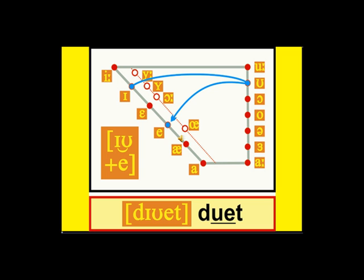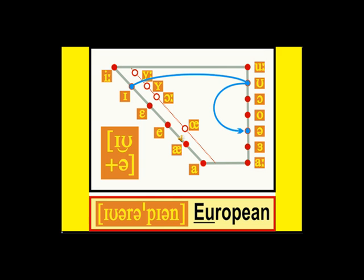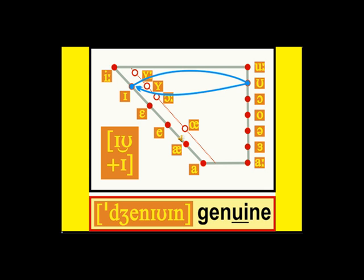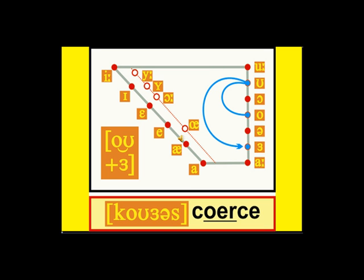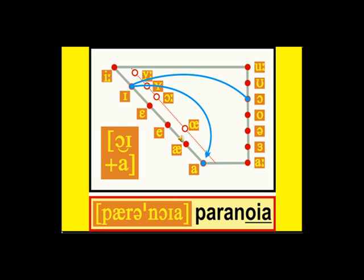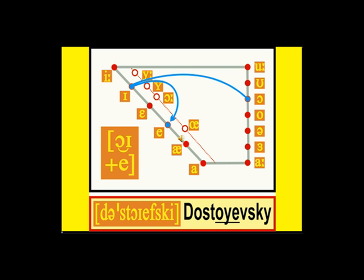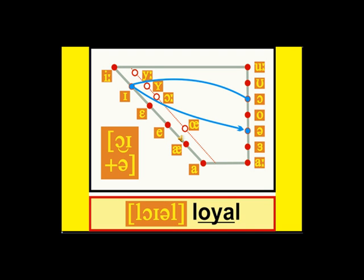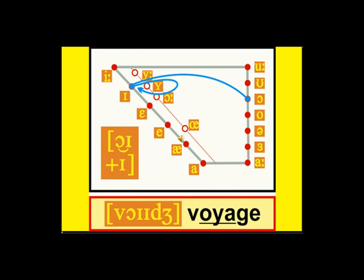Ue, duet. Ue, European. Ue, genuine. Oa, coerce. Oya, paranoia. Oya, Dostoyevski. Oya, loyal. Oya, voyage.